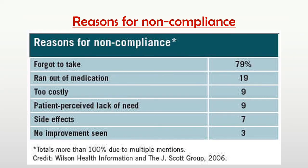This is data from Wilson Health Information. In 2006, a survey was carried out on a number of patients to find out the various reasons for non-compliance. It was found that 79% of patients did not adhere toward the therapy because they forgot to take the medication. 19% ran out of medication because they didn't know the refill instructions. 9% were not buying their medication due to cost. Some patients pursued a lack of need, overestimating that they feel okay. Sometimes minor side effects were present, and sometimes patients saw no improvement in their health and hence discontinued therapy.